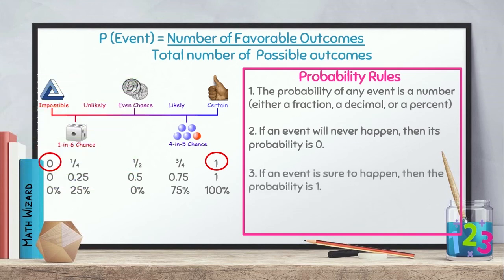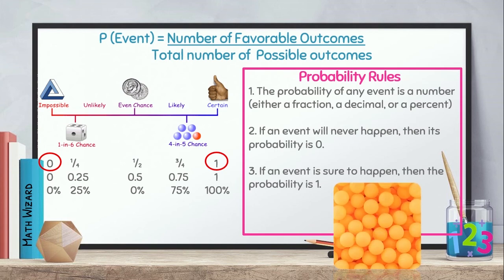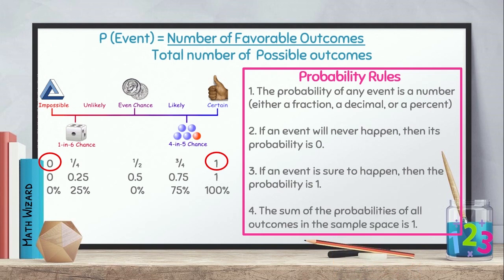Ang next naman na rule is, if an event is sure to happen, then the probability is 1. Or, tinatawag siyang certain. Example, I have a set of yellow ping pong balls. Without looking, ano yung probability na ang makukuha ko is yellow ping pong balls? So, probability is 1. Bakit 1? Sure to happen. Kasi, wala namang ibang colors sa set ng ping pong balls na meron ako, except yellow. The sum of the probabilities of all the outcomes in the sample space is 1. If I add all the probabilities in the outcomes, the result is 1.